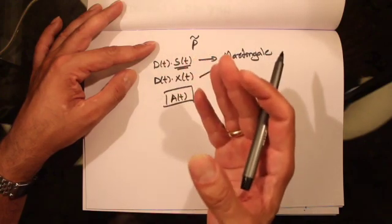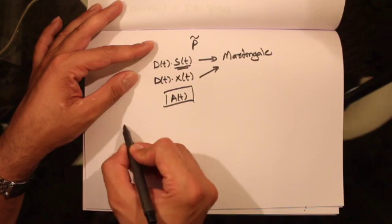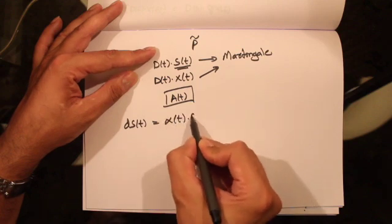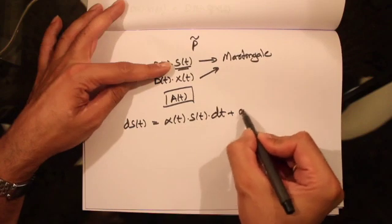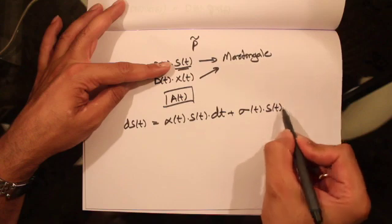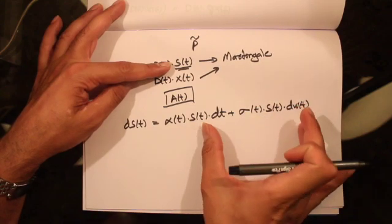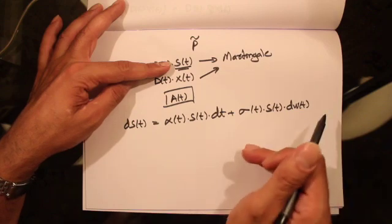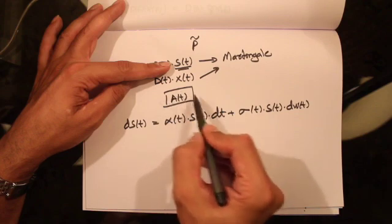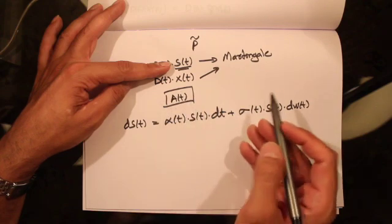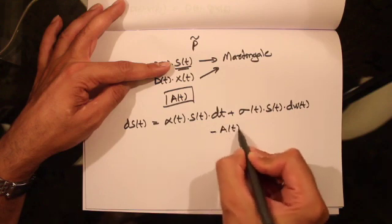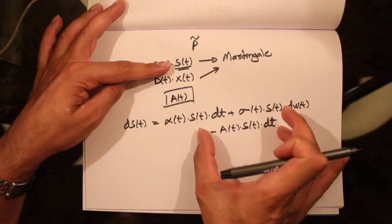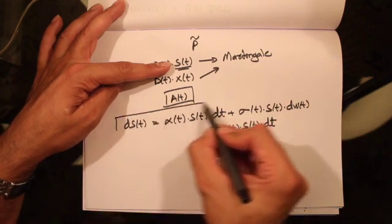We want to look at how the stock process evolves. If the stock is modeled as a geometric Brownian motion, the evolution of the stock process can be given by alpha_t * s_t * dt + sigma_t * s_t * dw_t. This was the case for a non-dividend paying stock, but because our stock pays a continuous dividend, whenever a stock pays some dividend the value of the stock goes down by the dividend amount. Since the stock is paying dividend at the rate of a_t per unit time, the stock would go down by a_t * s_t * dt.